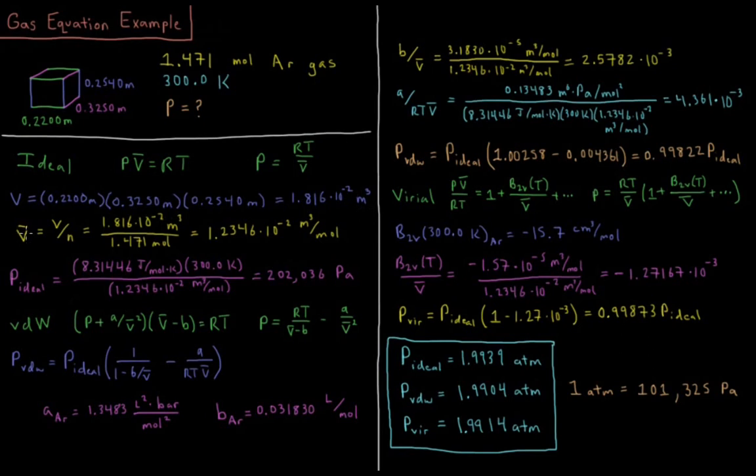That gives us 1.816 times 10 to the minus 2 meters cubed. For molar volume, we take that value and divide it by the number of moles. So 1.816 times 10 to the minus 2 meters cubed divided by 1.471 moles of argon gas gives us 1.2346 times 10 to the negative 2 meters cubed per mole.